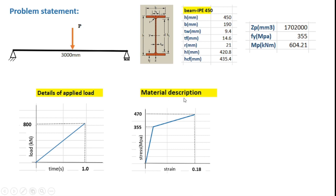The material description is shown here. The true stress curve is idealized as a bilinear stress curve for the steel. There are two significant points: the yield stress and the ultimate stress. The yield stress for the material is 355 MPa, and the corresponding strain is 355 divided by E. The ultimate stress is 470 MPa with a corresponding total plastic strain of 0.18, that is 18 percent.